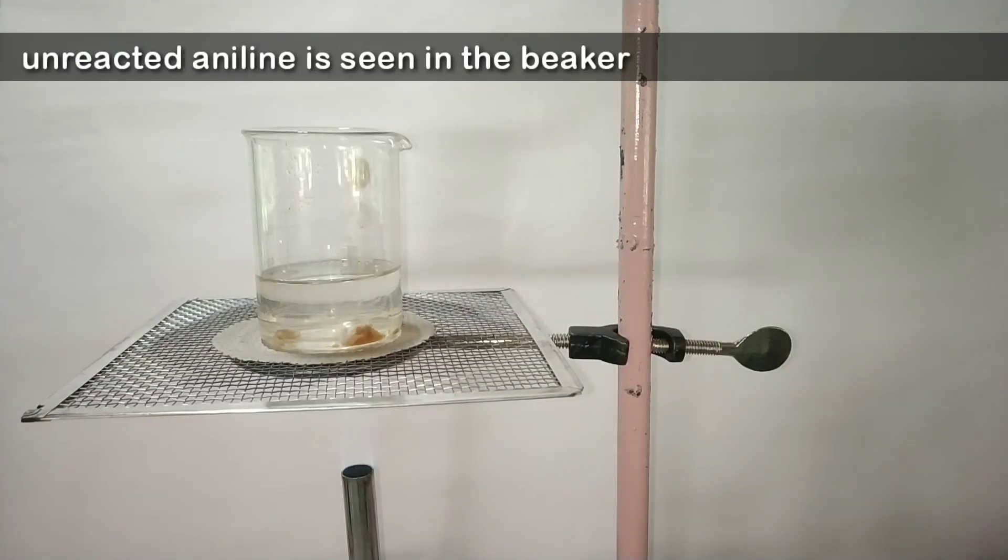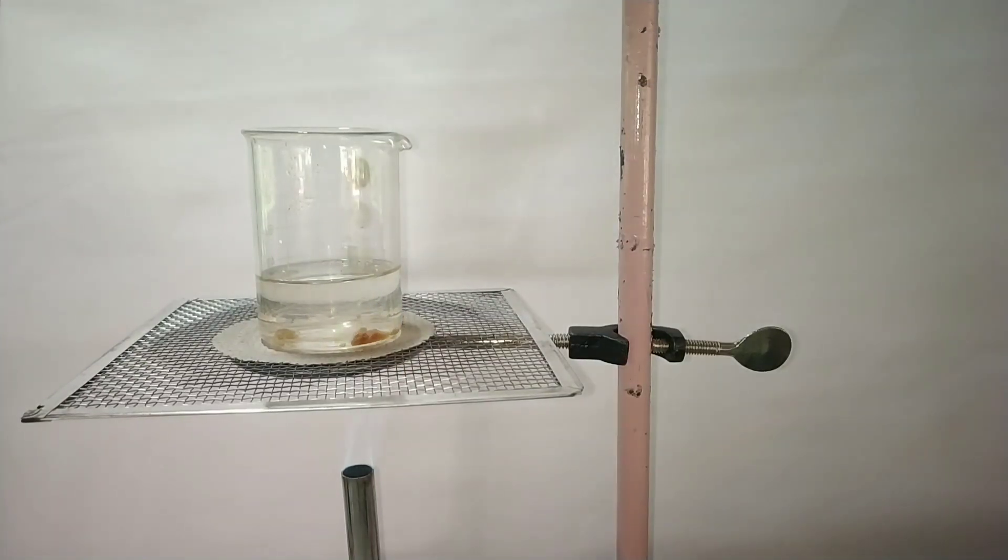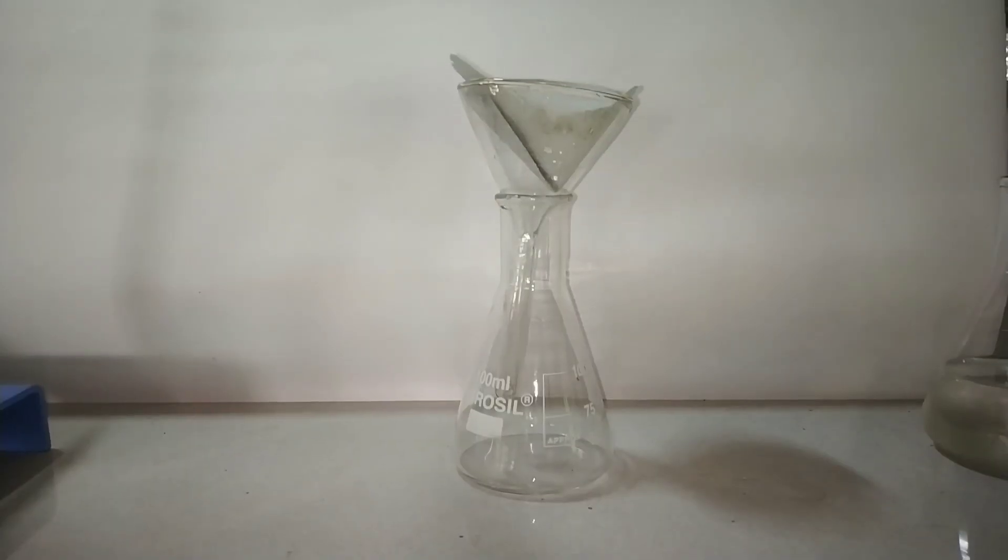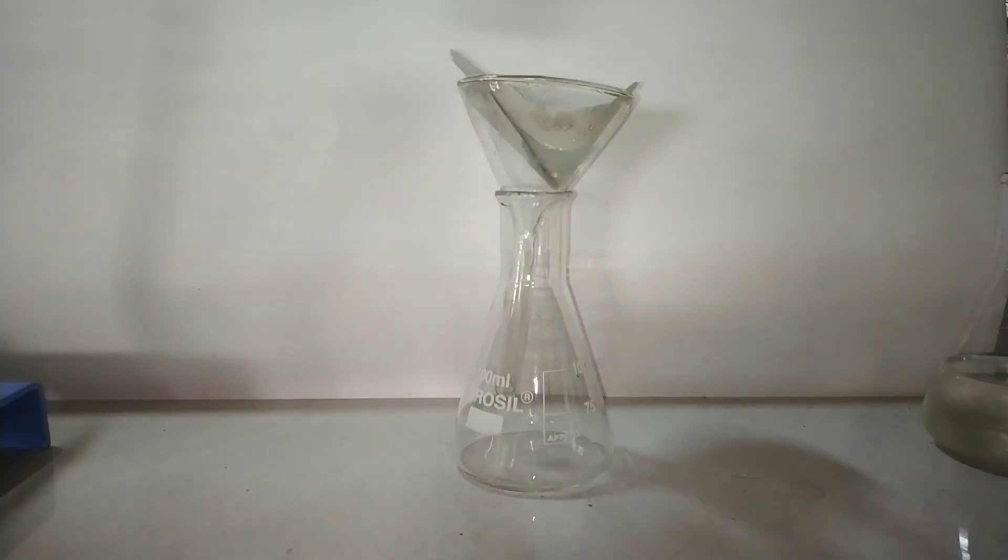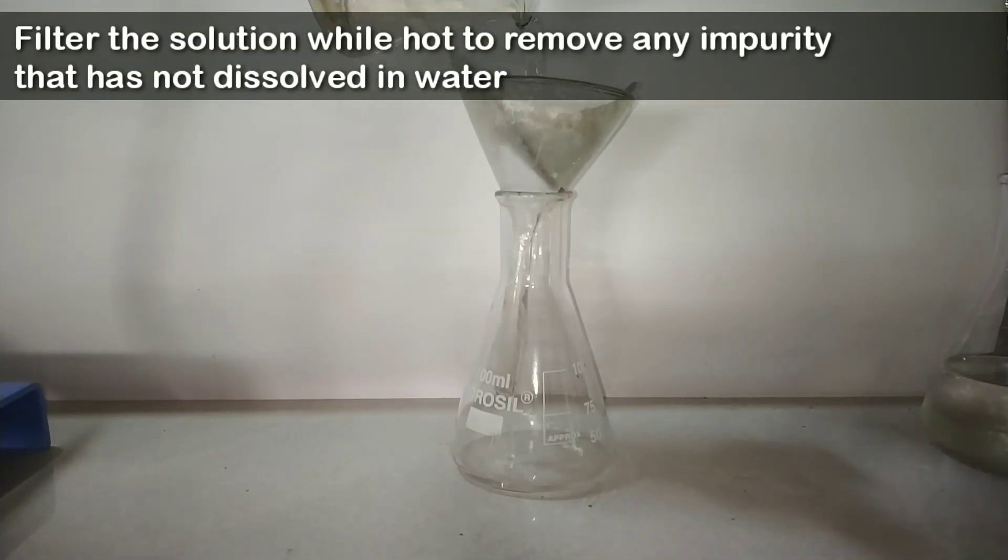But you see some jelly like solid in the bottom. I assume it is the unreacted aniline and I removed it. Now I filter the solution while it is still hot to remove any undissolved substances.